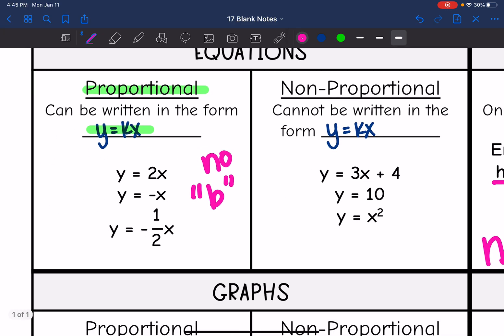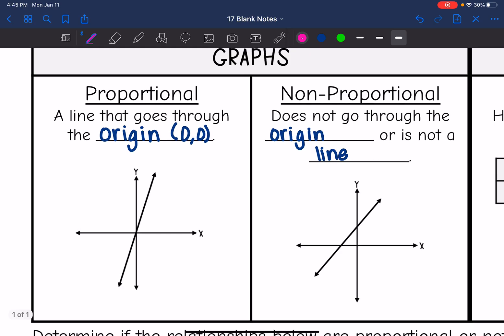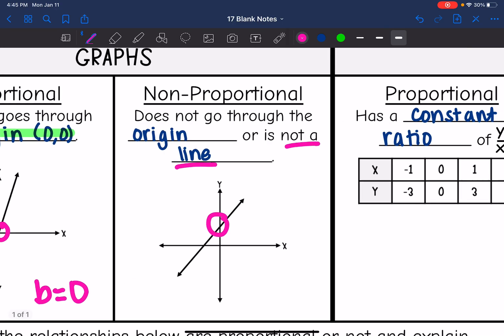Let's look at graphs. A proportional graph has to be two things: it has to be a line and it has to go through the origin. Remember, there is no b or b equals zero. So this would be a proportional graph because it's a line and it is going through the origin right there. Non-proportional does not go through the origin like this one, or if it's not a line, then it's not proportional either.